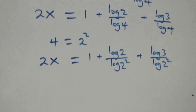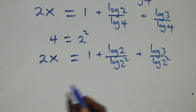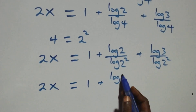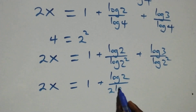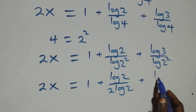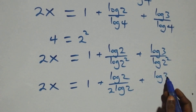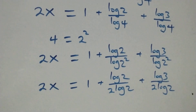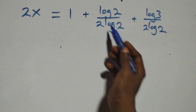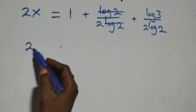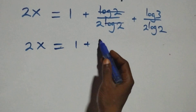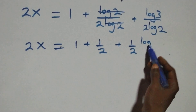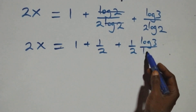Applying the power rule of logarithms, the 2 from the squared comes down: 2x equals log 2 over (2 log 2) plus log 3 over (2 log 2). Then log 2 cancels, leaving 1 over 2, so 2x equals 1 plus 1 over 2 plus (1 over 2) times log 3 over log 2.